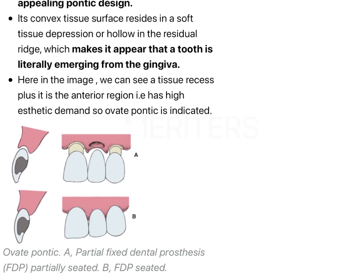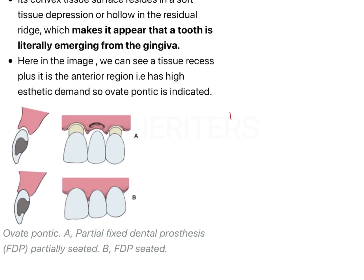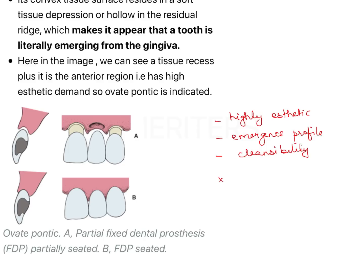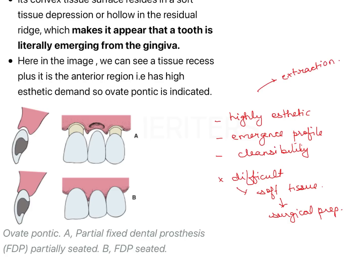Ovid Pontic is highly aesthetic and replicates the emergence profile with good cleansability, but it is difficult to fabricate. It is difficult because the soft tissue on the undersurface of the Pontic normally requires surgical preparation. However, you can directly use it for extraction sockets without that surgical preparation. In this case, since it is an extraction socket, there is no need for surgical preparation — making Ovid Pontic a good indication here.